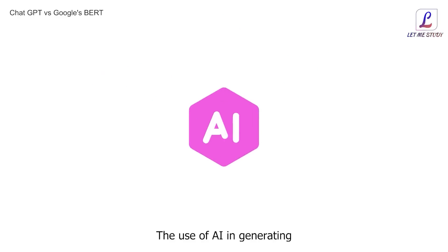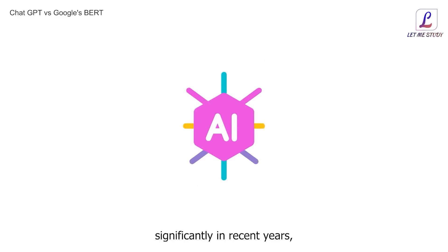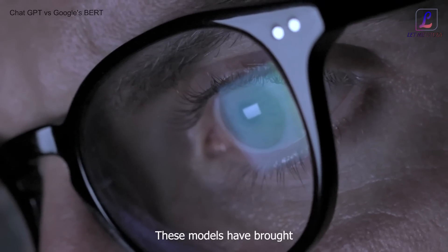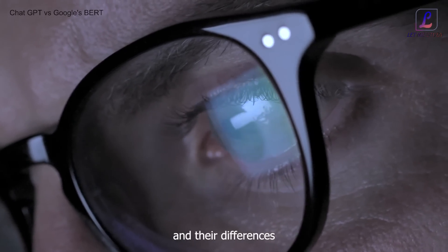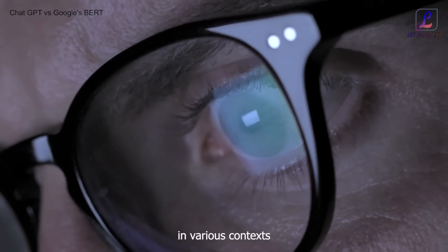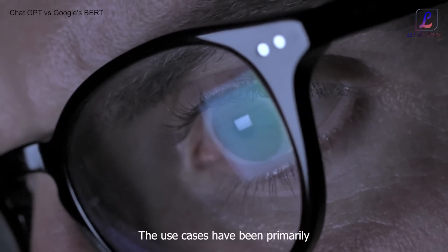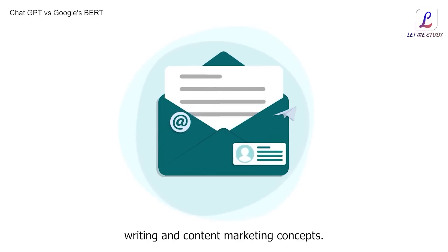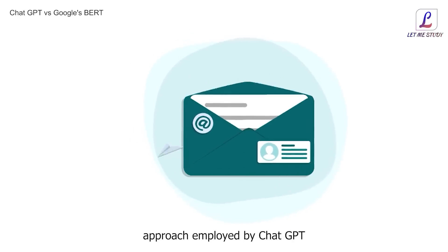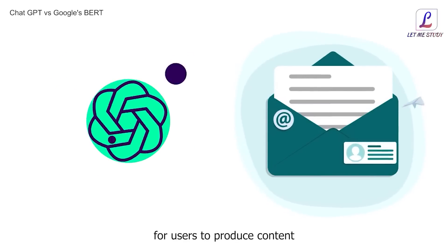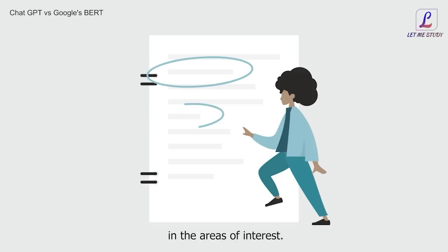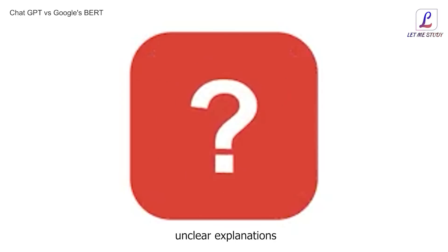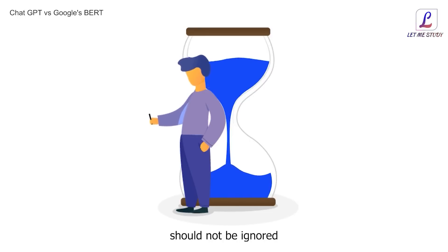The use of AI in generating content has grown significantly in recent years, with ChatGPT and Google's BERT being at the forefront of the conversation. These models have brought tremendous benefits to their users, and their differences have provided different advantages in various contexts. For ChatGPT, the use cases have been primarily focused on text-based tasks such as email writing and content marketing concepts. The generative pre-training approach employed by ChatGPT has made it easier for users to produce content without extensive prior knowledge. However, its limitations in providing accurate information, unclear explanations, and a long waiting list for its full capabilities should not be ignored.